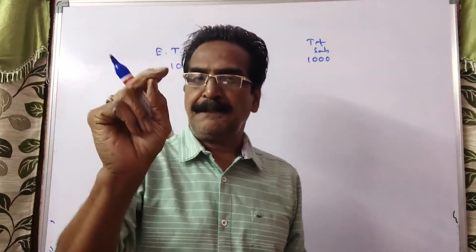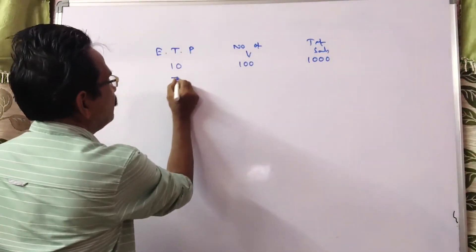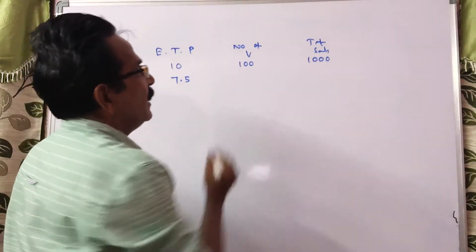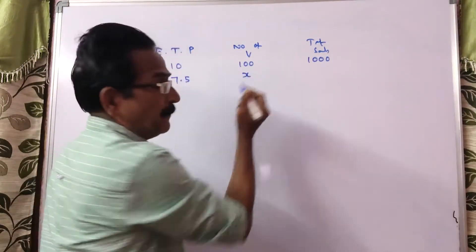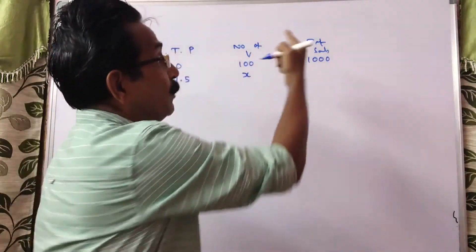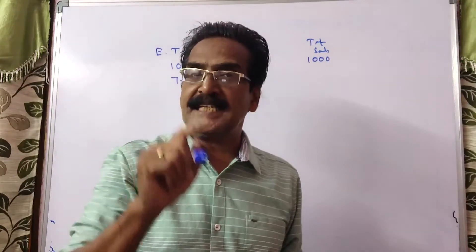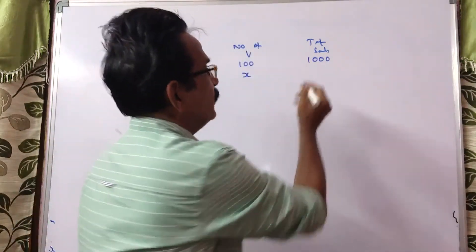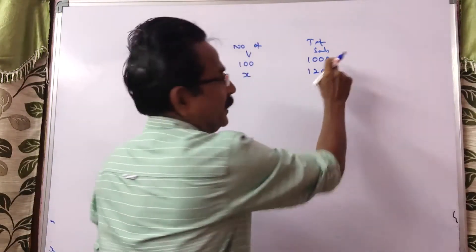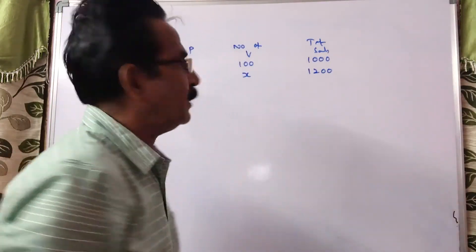Now the price of the ticket is reduced by 25%, so the new price is Rs. 7.5. And say now the number of visitors is X. Now the total sales is increased by 20%, so it has become 1,200. 20% increase means 1,200.